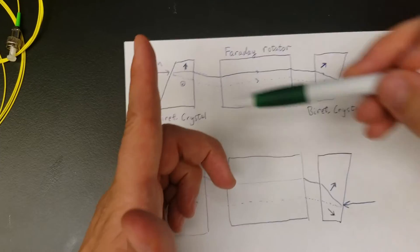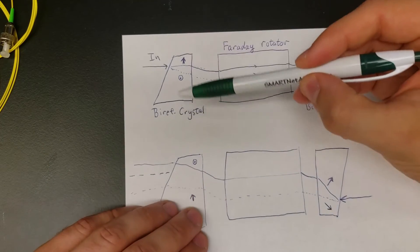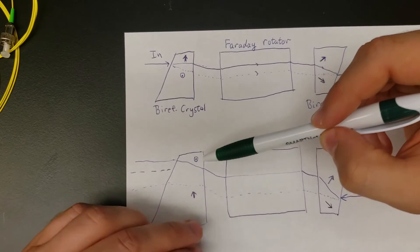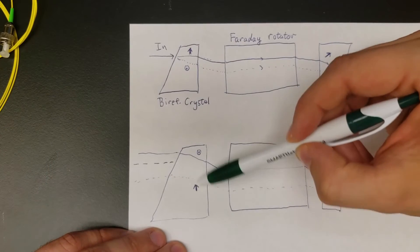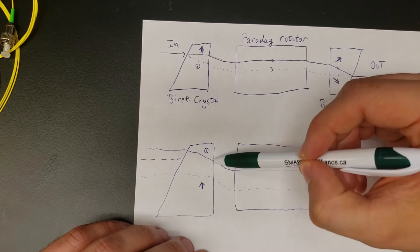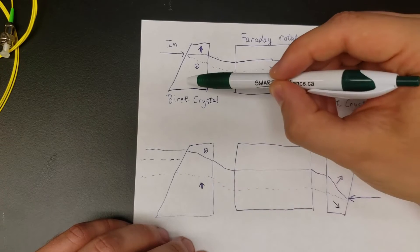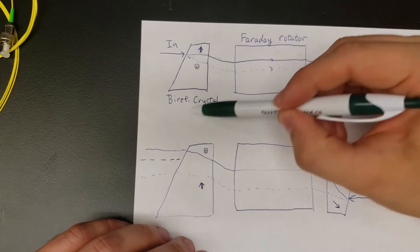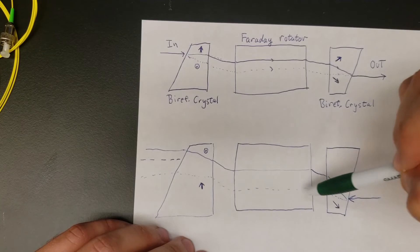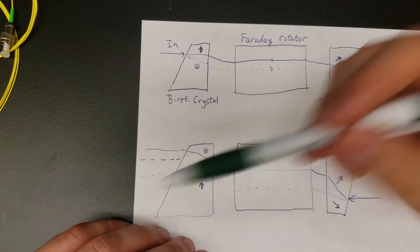But now instead of rotating back to the original position, they experience the same rotation as before in the same direction. So this beam is polarized perpendicular to the sheet of paper, whereas the other one is polarized along the in-plane direction. This means when they hit this birefringent crystal, the bending angle no longer matches what they had before. This beam goes up and totally misses the dashed line representing the input direction. It hits a brick wall and doesn't go into the input port. The same happens for the lower beam—it doesn't have the correct polarization to follow the path, it just hits a brick wall and gets lost.